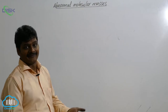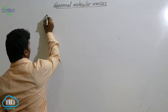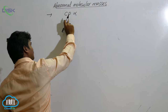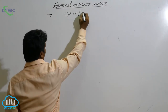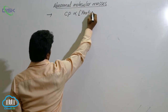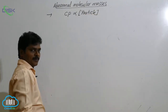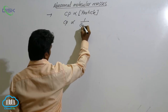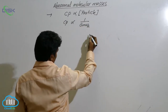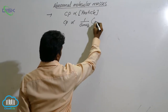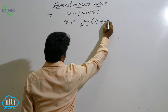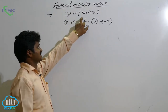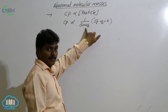Why do we obtain abnormal values for some solutes but correct values for others? Any colligative property — whether RLVP, delta Tb, delta Tf, or pi — is directly proportional to particle concentration, but inversely proportional to the gram molecular weight of the solute, if the weight of the solute is the same.